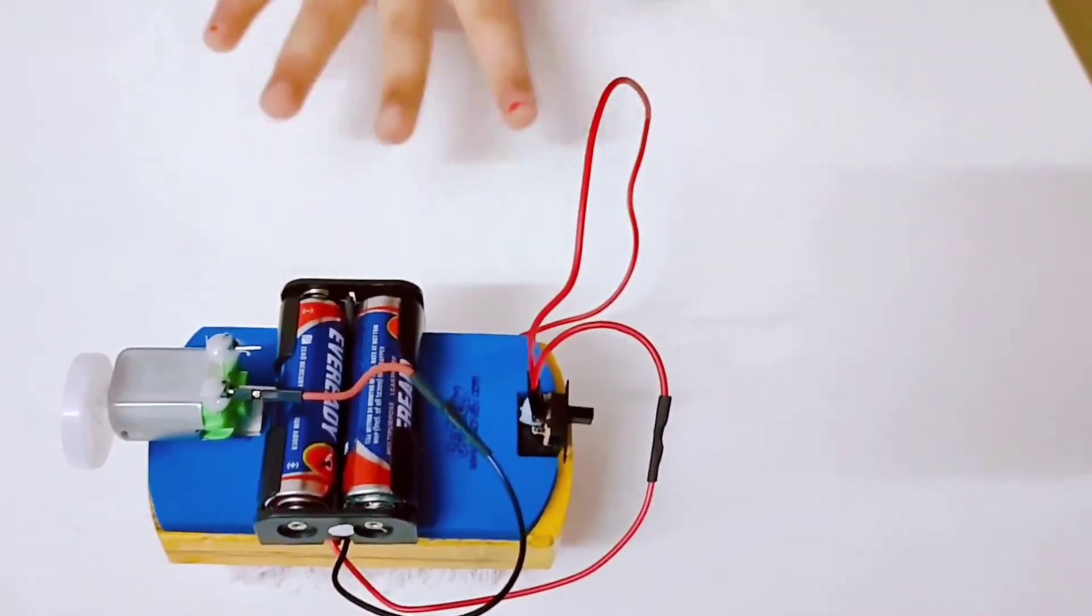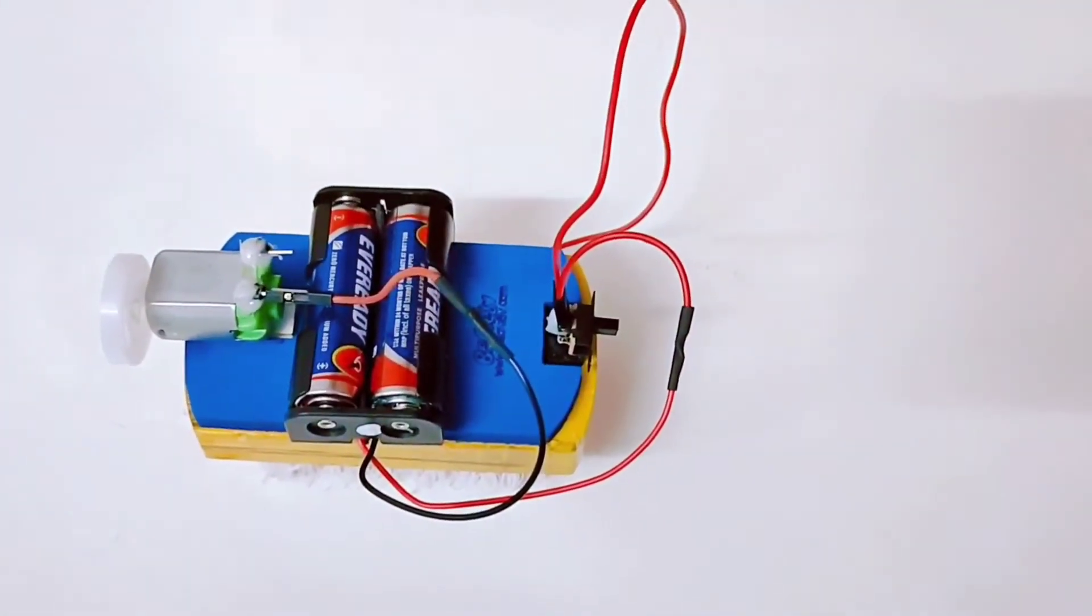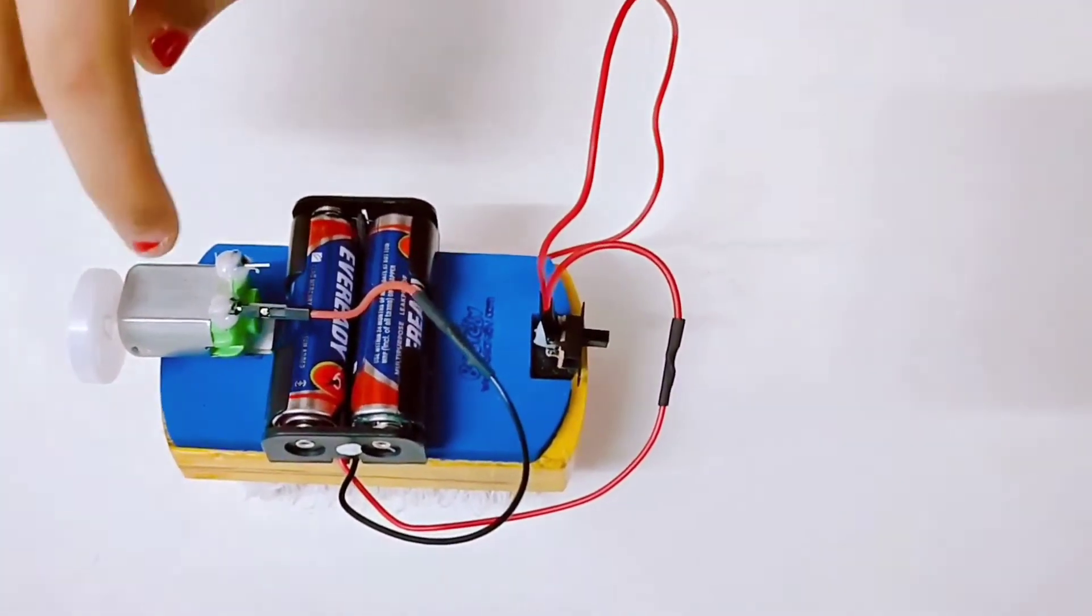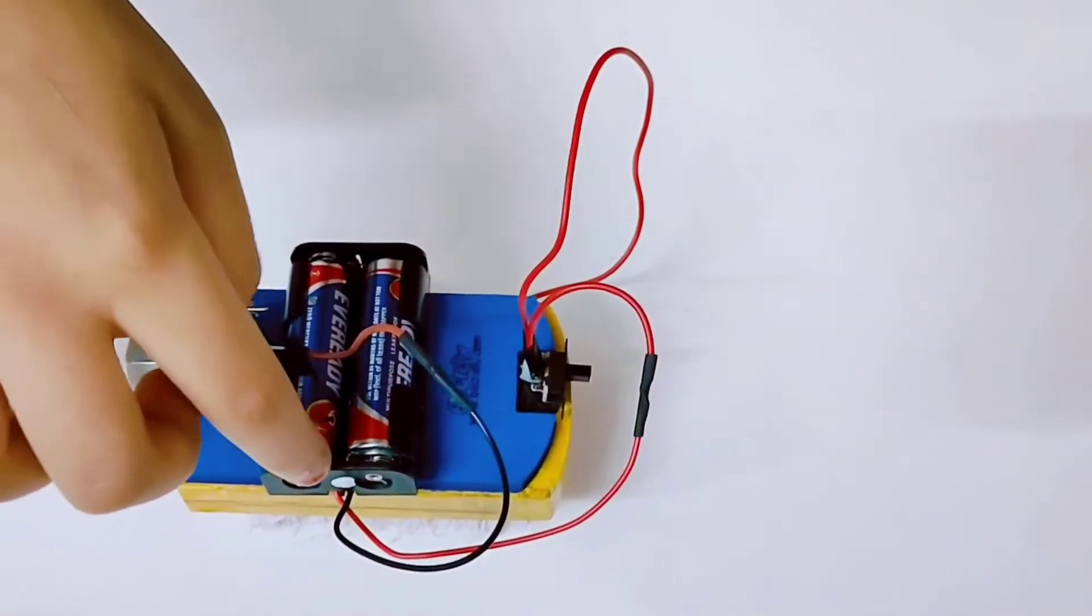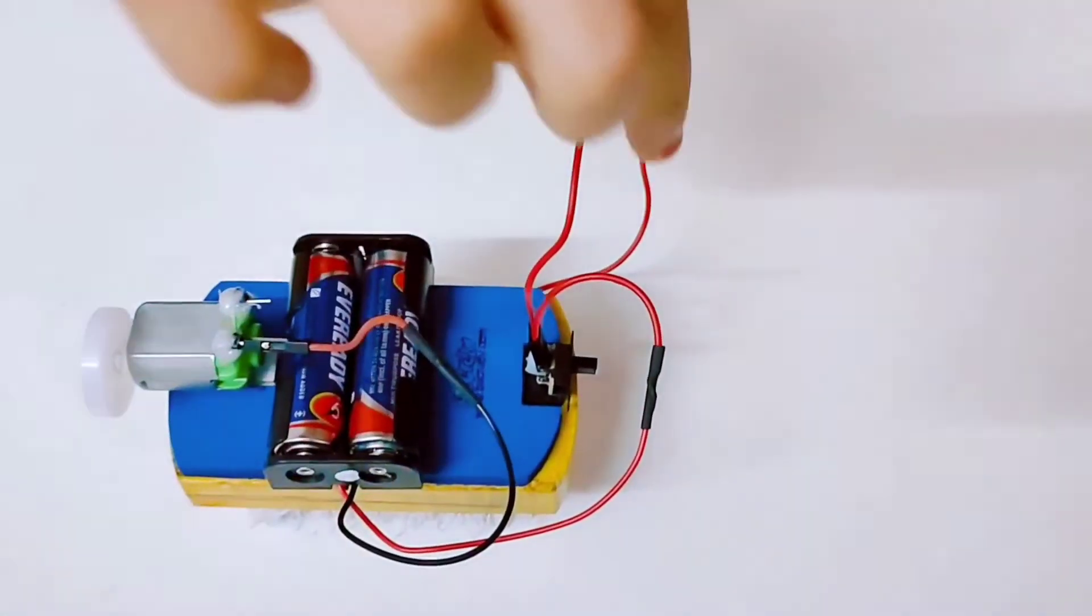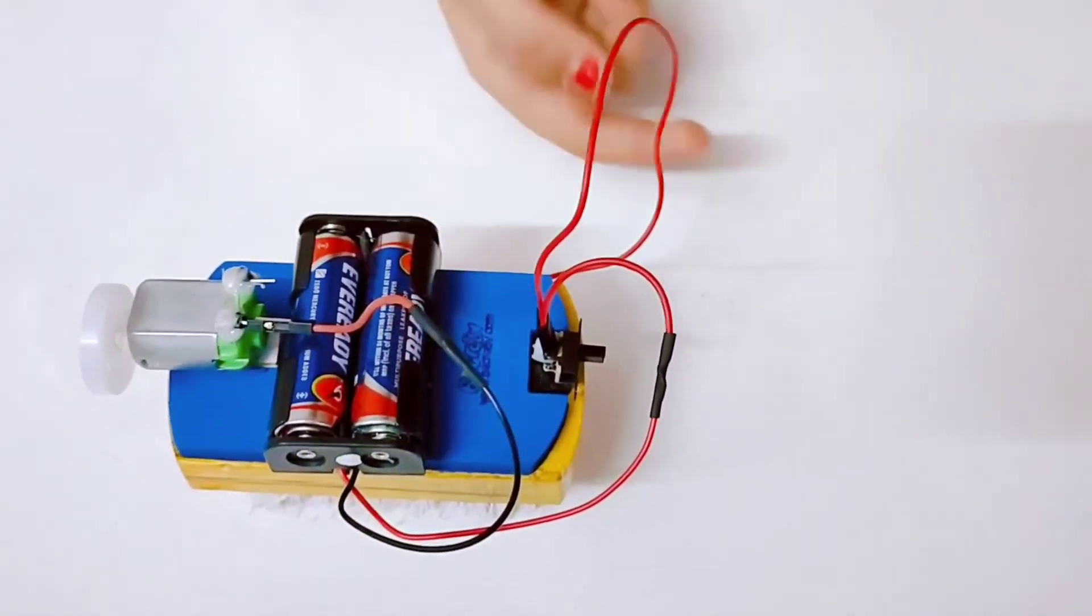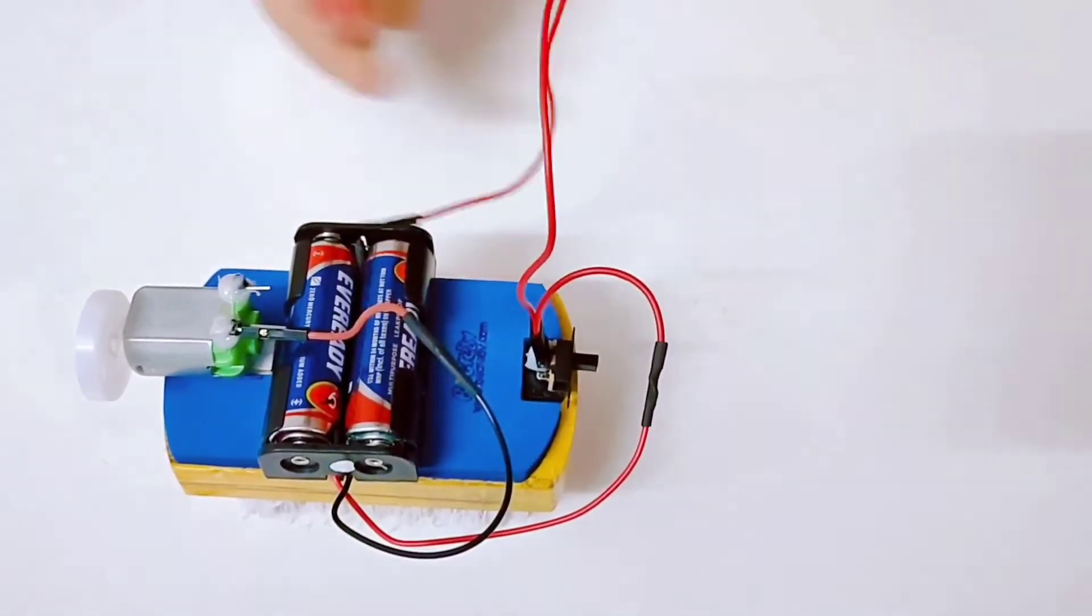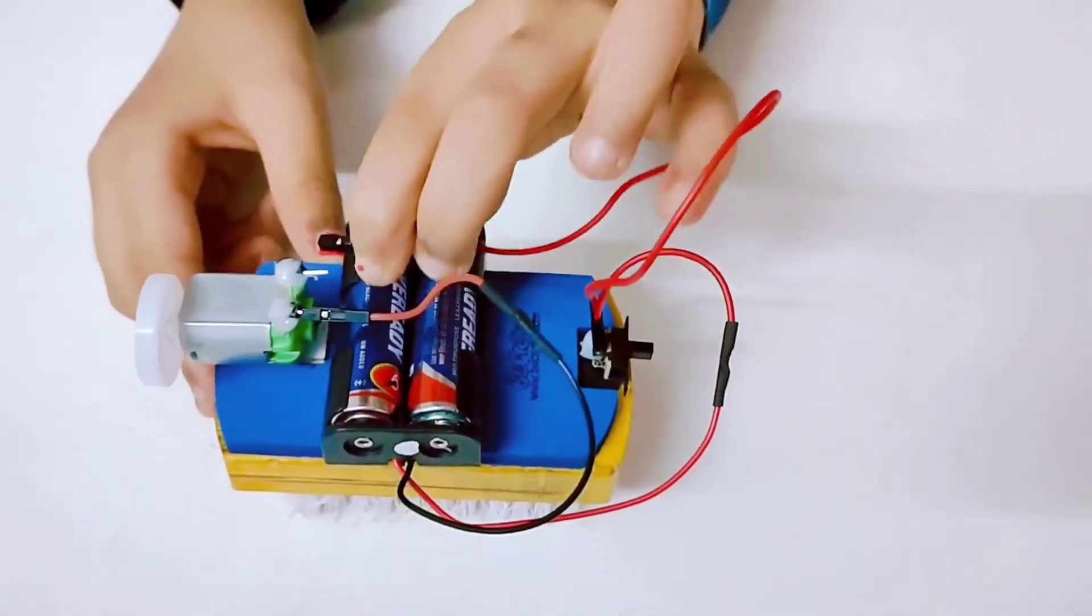So guys, this is the next step. We have to attach the switch using the double-sided tape, and then we have to connect the motor to the battery holder, and then from the battery holder to the switch using the wires provided. And then when we plug this into this, the motor will start. So shall we give it a try?